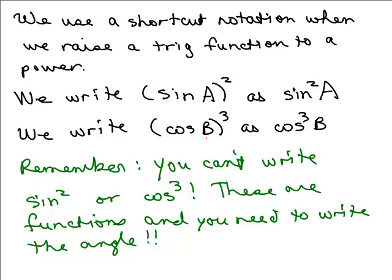Same thing, if you want to take the cosine of B and then cube it, you could just write cosine cubed B like this. So that's a way of leaving off the parentheses. Remember, you always have to say what the angle is. You can't just write sine squared or cosine cubed. That doesn't make any sense. You have to say the sine of what?